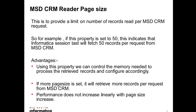We'll start with the MSG CRM reader page size. When we read from MSG CRM using the Informatica Adapter, there is one runtime property named page size. This is at the reader level and it specifies a limit on the number of records that we will extract or read from MSG CRM per request. For example, if this property is set to 50, each request sent to MSG CRM will fetch 50 records to the Informatica Adapter.